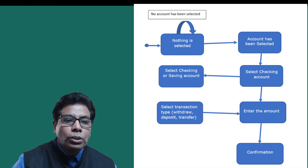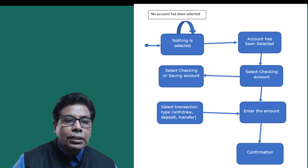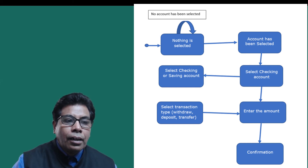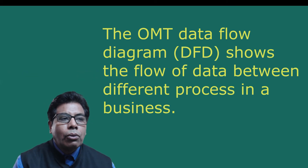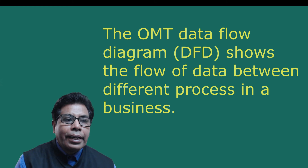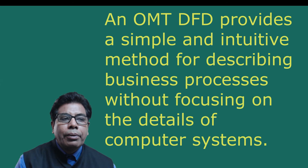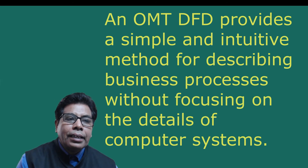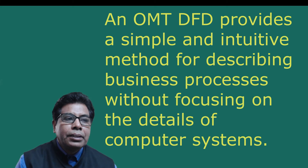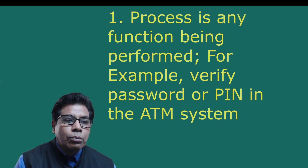As you can see in the figure, which shows the state transition diagram for the bank application user interface, the rectangular boxes represent states and the arrows represent transitions. The OMT data flow diagram shows the flow of data between different processes in a business. An OMT DFD provides a simple and intuitive method for describing business processes without focusing on details of computer systems.